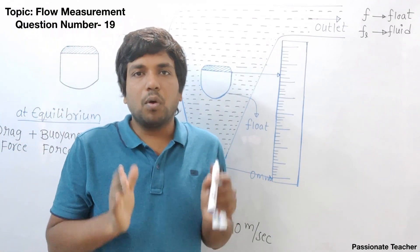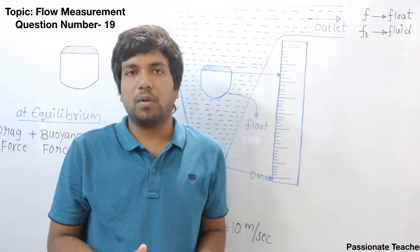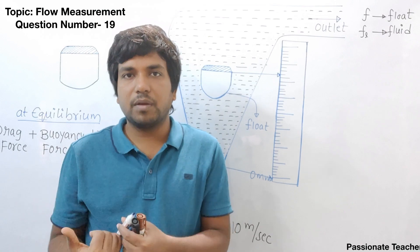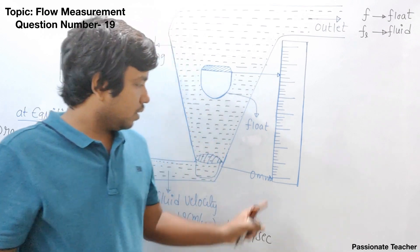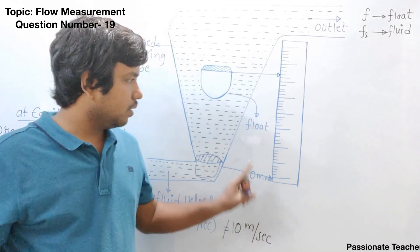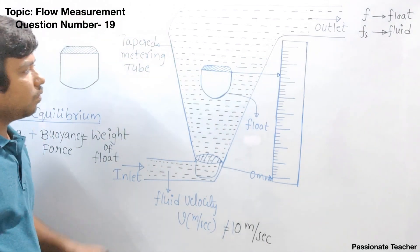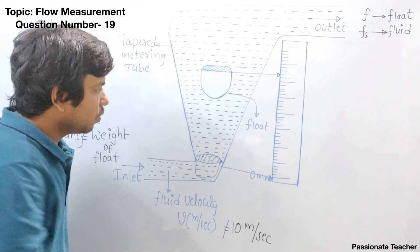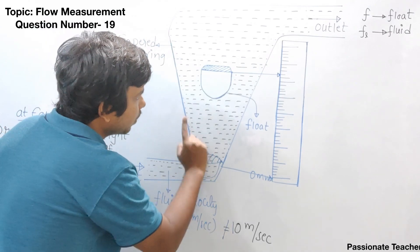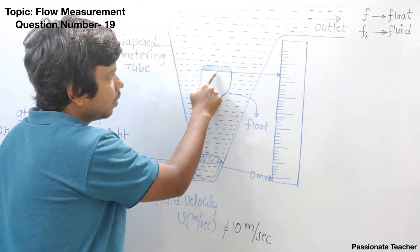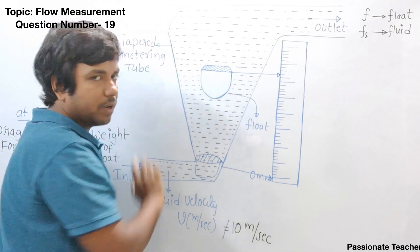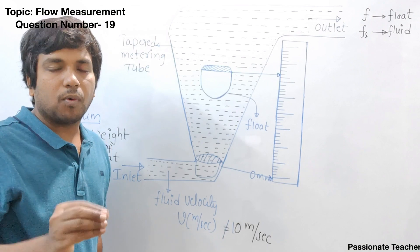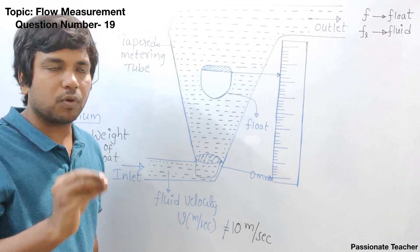In a rotometer, the float plays a very dominant role. The float is the one that indicates the velocity of the fluid in terms of height on the scale. The float will rotate and stop at one particular point where equilibrium is achieved. To understand the concept of equilibrium, we must know what forces are acting on the float.